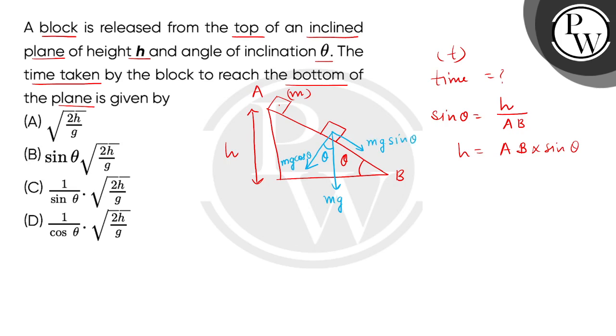For sliding down, this mg sine theta is responsible, so we can write ma equals to mg sine theta. So bachow, this became our equation number 1 for height and acceleration became equation number 2.